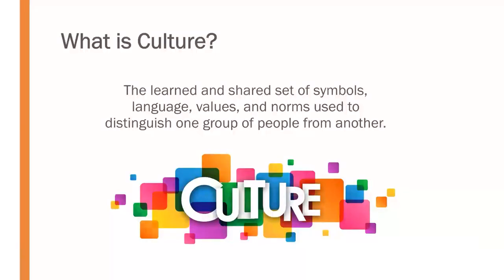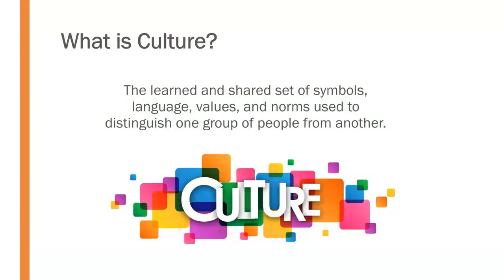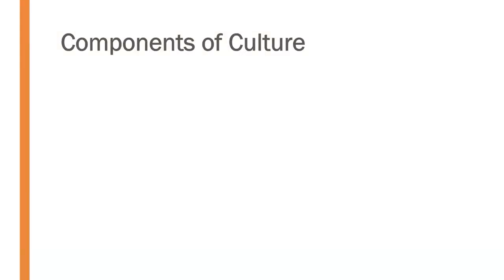Let's start with the definition of what culture is. Culture is the learned and shared set of symbols, language, values, and norms used to distinguish one group of people from another. Let's break that down in terms of the important components of culture. First of all, we have symbols. In every culture you have symbols that represent important aspects and ideas within that culture.